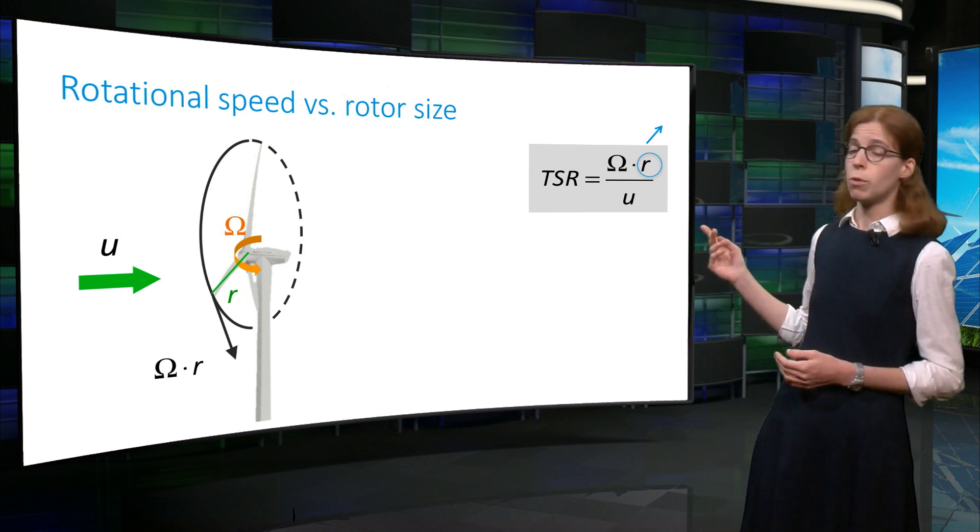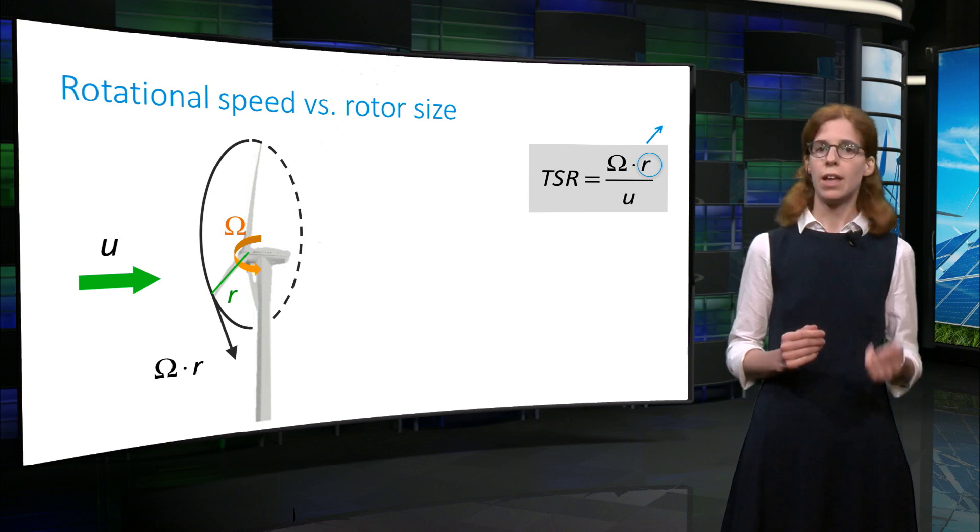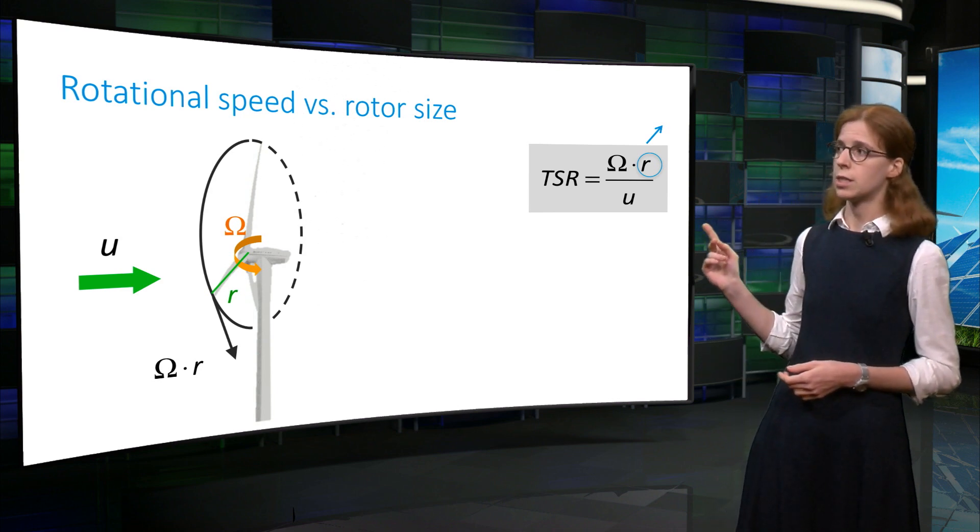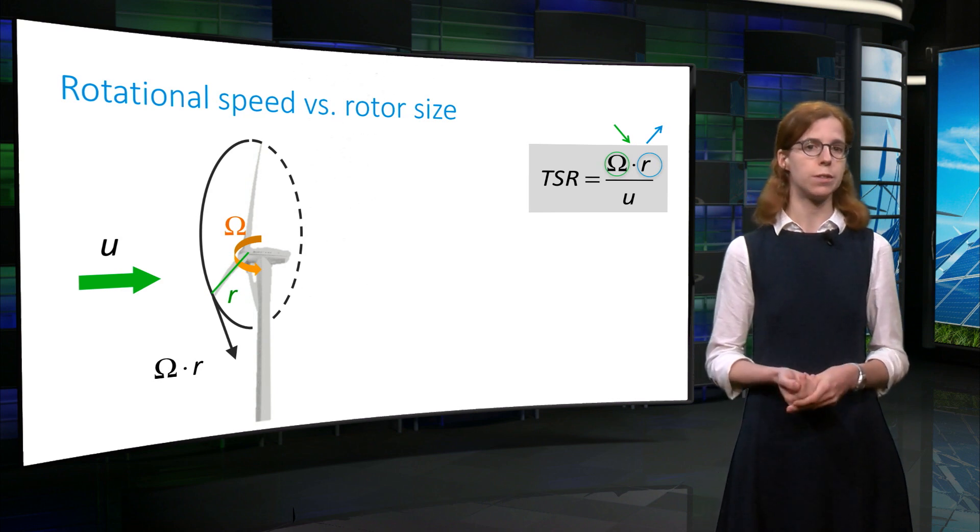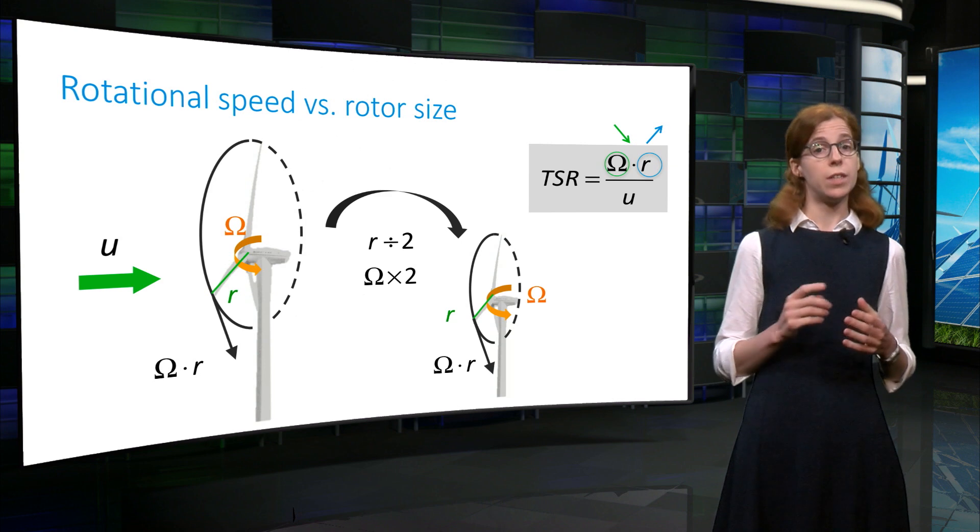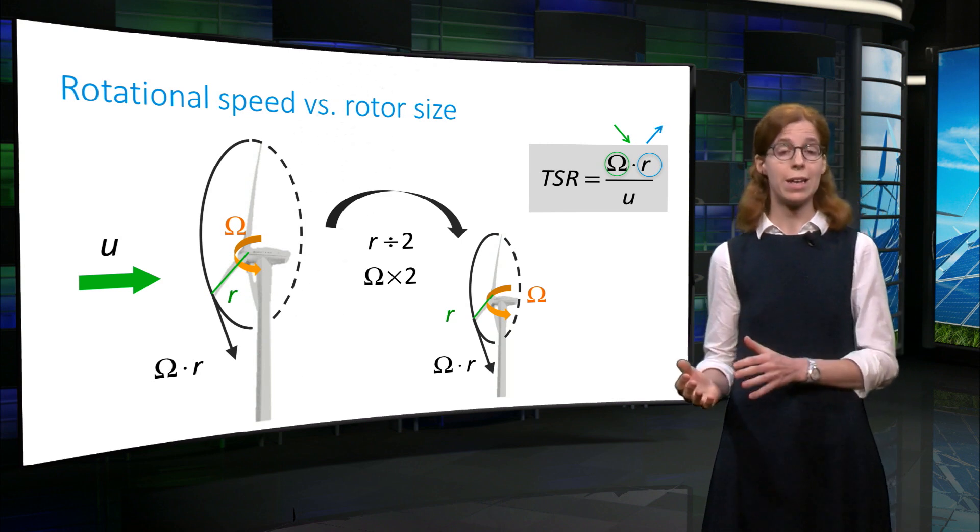As you can see from the formula, for a given wind speed U, if the length of the blade R increases, omega has to decrease in order to keep the tip speed ratio constant. Thus, in theory, a rotor half as small will rotate twice as fast.